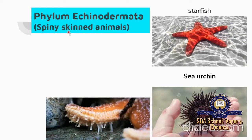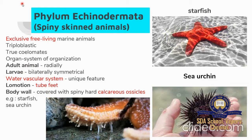Next Phylum is Echinodermata — otherwise known as spiny-skinned animals. They are exclusively free-living marine animals, triploblastic with true coelom and organ system grade of organization. Adult animals are radially symmetrical but larvae remain bilaterally symmetrical. A unique feature is the presence of a fluid-filled water vascular system, and locomotion is effected by tube feet. The body wall is covered with spiny calcareous ossicles. Examples: starfish and sea urchin.